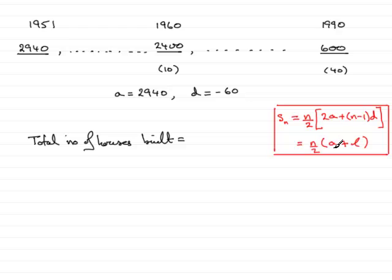I could use any of these to get the sum of the first 40 terms, S40 in other words. But I'm going to use this last formula. Why?